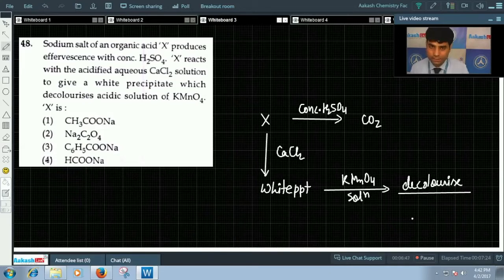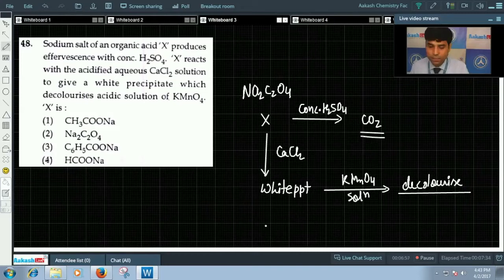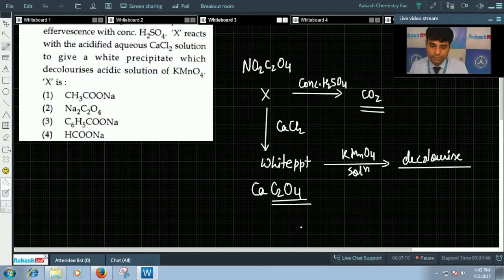So what should be X? X will be sodium oxalate, because sodium oxalate is oxidized by concentrated H2SO4 giving you carbon dioxide. The white precipitate formed here is CaC2O4, and when it reacts with KMnO4 solution it will be oxidized. C2O4²⁻ ion will be oxidized. Hence the correct answer is option 2, that is sodium oxalate.